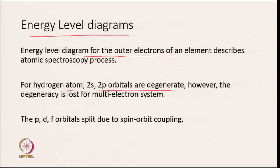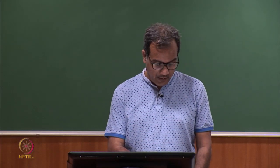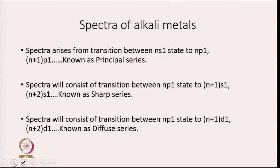For the hydrogen atom, 2s and 2p orbitals are degenerate, but the degeneracy is lost for multi-electron systems. P, D, and F orbitals split due to spin-orbit coupling. Now, the spectra of alkali metals arises from transitions between the Ns¹ state to the Np¹ state.